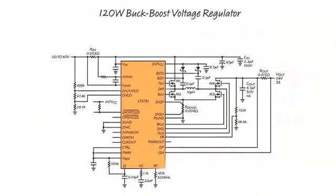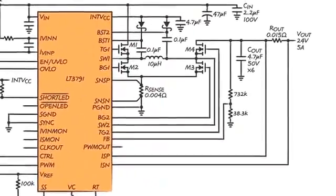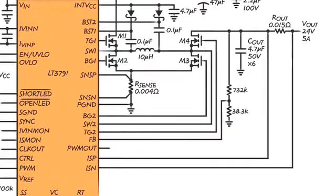Here, the 3791 is used as a 24-volt, 5-amp buck-boost voltage regulator. The feedback resistors and feedback pin regulate the 24-volt output.